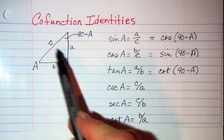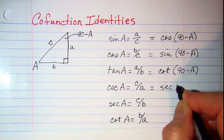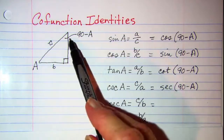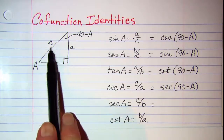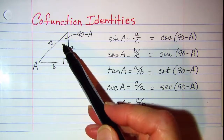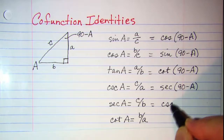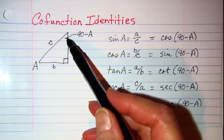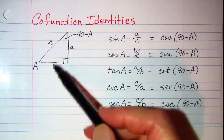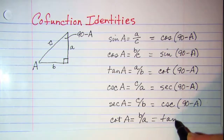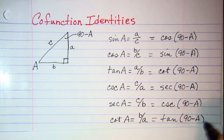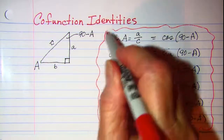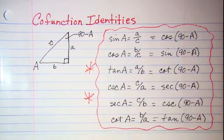For C over A, that would be the secant of 90 minus A. For C over B with respect to 90 minus A, that's hypotenuse over opposite, which is cosecant of 90 minus A. And then B over A for this angle up here — B over A is opposite over adjacent — so that is our tangent. These are our co-function identities.